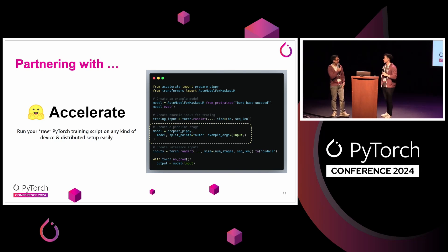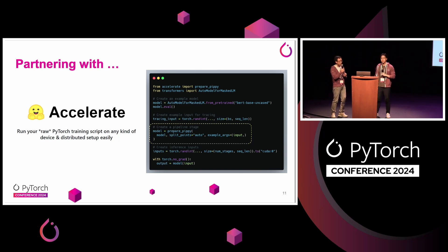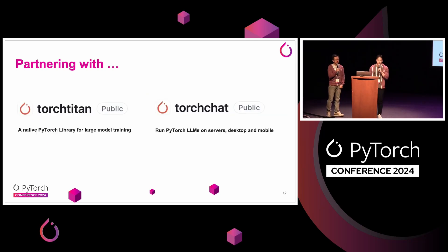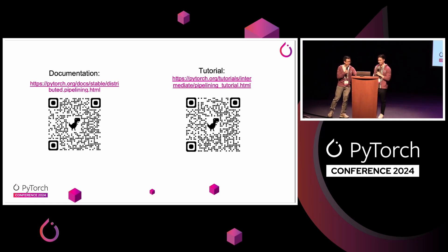Speaking about community, our project wouldn't be here without our partners' support. Hugging Face is one of our big supporters from day one, and our APIs have been integrated into the Hugging Face Accelerate library. On the right-hand side is a small script example showing how you can use a Hugging Face API called PreparePP to use this functionality on downloaded Hugging Face models. We're also partnering with Torch Titan to demonstrate 3D parallelism — that's FSDP plus tensor parallel plus pipeline parallel — and also Torch Chat to run your LLMs on any device. In summary, in PyTorch we try very hard to make parallelism simple, so please give us a try if you want to make your model parallel without a lot of work. Here's our documentation and tutorial. Thank you.